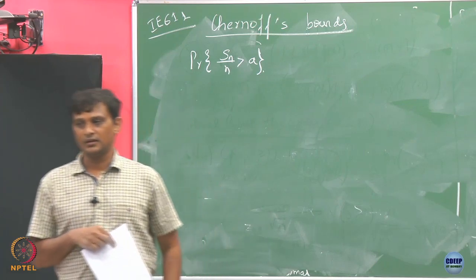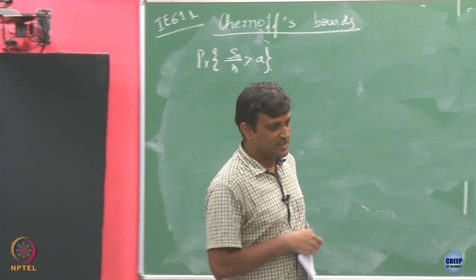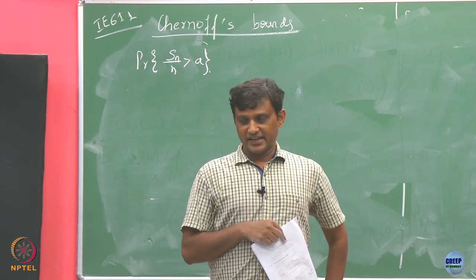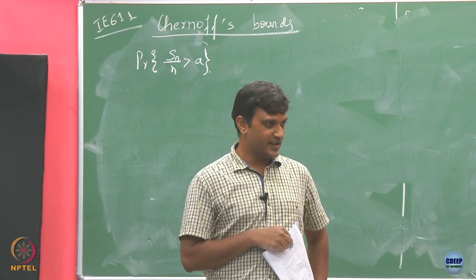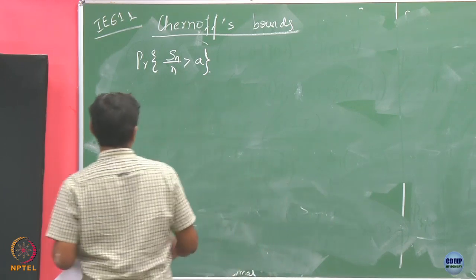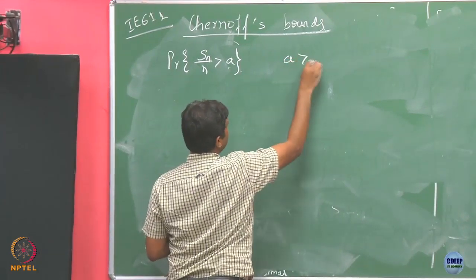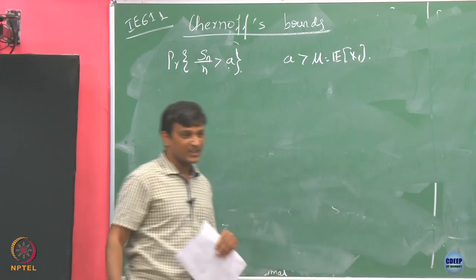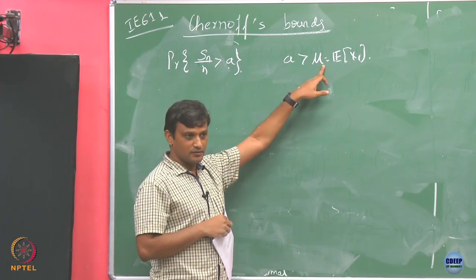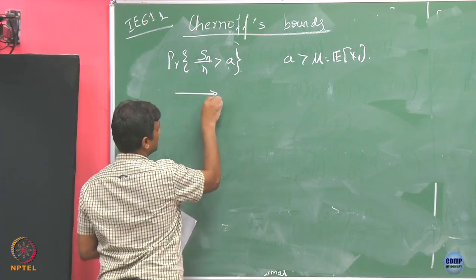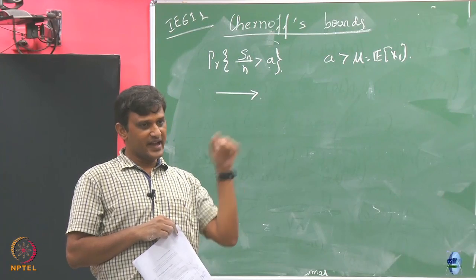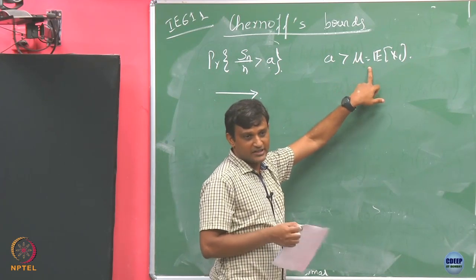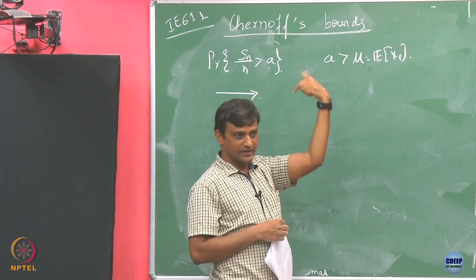What I know about SN/n from the law of large numbers is that SN/n converges to the mean in probability and also almost surely. Let us say this A is greater than mu, where mu is my expectation. If my A is greater than mu, what should happen as n goes to infinity? As n tends to infinity, SN/n goes to mu. I am asking it to take a value A which is larger than mu — that is not going to happen, because SN/n is going to the value mu, so this probability is going to 0.